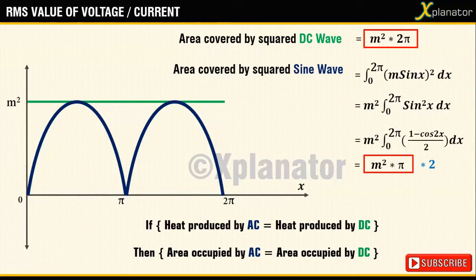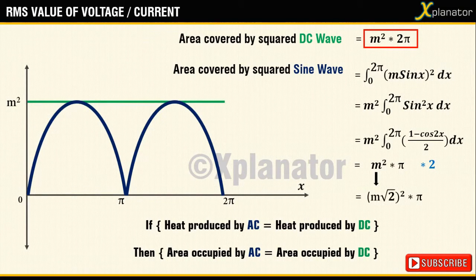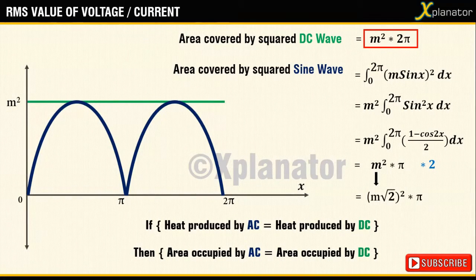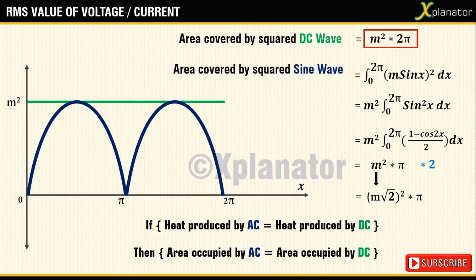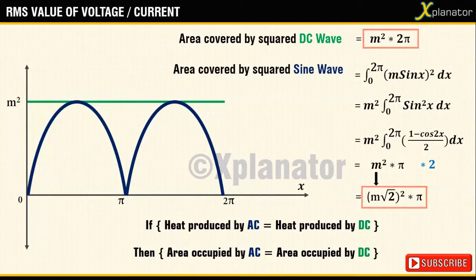Which means if the magnitude of AC wave is changed from m to m√2, then the area occupied will change its magnitude to m² × 2π, which will be the same area as that occupied by the squared DC wave.